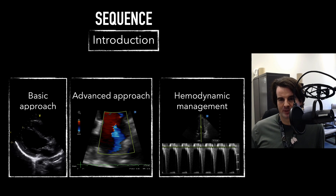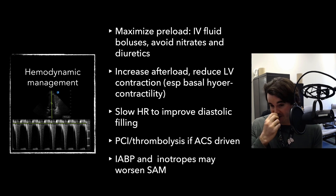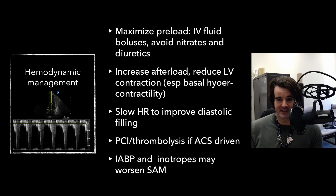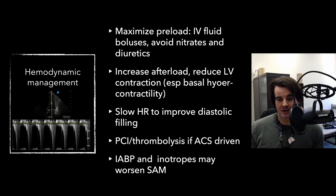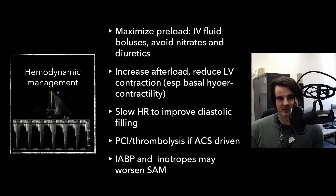That covers the basic and advanced approaches. Now let's talk hemodynamics. From a hemodynamics standpoint, the key interventions include maximizing preload with IV fluid boluses — perhaps under pressure to really expand the left ventricle and outflow tract — while avoiding nitrates and diuretics that reduce cavity volume. You want to increase afterload and reduce LV contraction, which often requires switching from a mixed inotrope-vasopressor like norepinephrine to a pure vasopressor like phenylephrine, increasing SVR while decreasing contractility. Also, slow the heart rate to improve diastolic filling — IV esmolol can reduce heart rate, expand the cavity, and reduce the chance of dynamic obstruction.